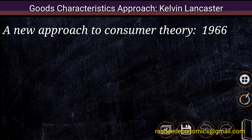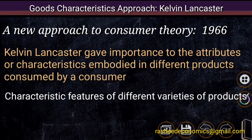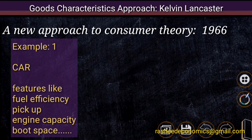In his theory, Lancaster gave importance to the attributes or characteristics embodied in alternative products of different varieties. In other words, Lancaster gave priority to the characteristic features of different varieties of products, which are alternatives to each other. For example, if a consumer is going to purchase a car, the consumer may give preference to different attributes such as size of the car, fuel efficiency, pickup, engine capacity, and boot space.